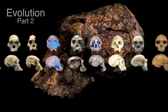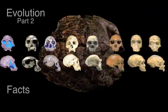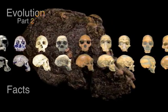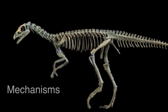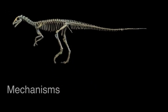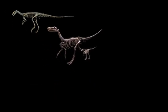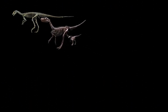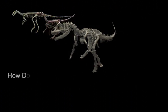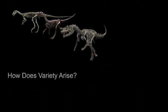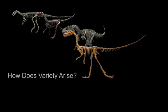In part one of our story of evolution, we demonstrated the facts of evolution. In part two, we will explore the mechanisms. And to do that, we need to ask and answer just two questions: How does variety arise in the genomes of individuals in a group? And how does that variety give rise to new species?